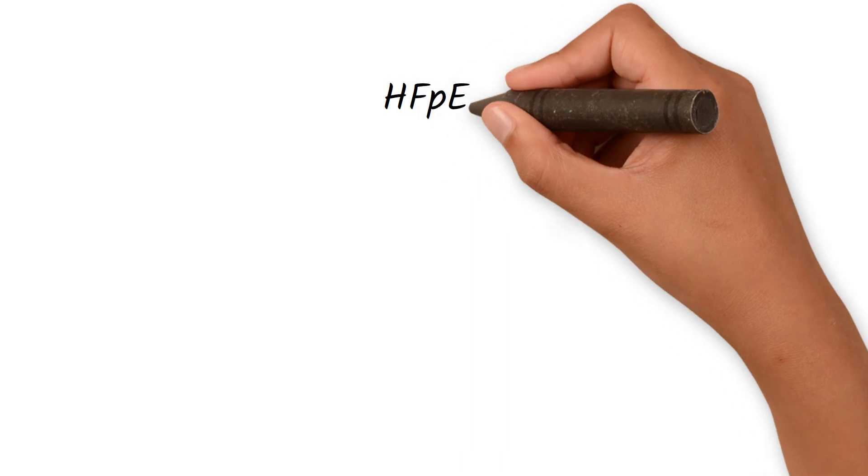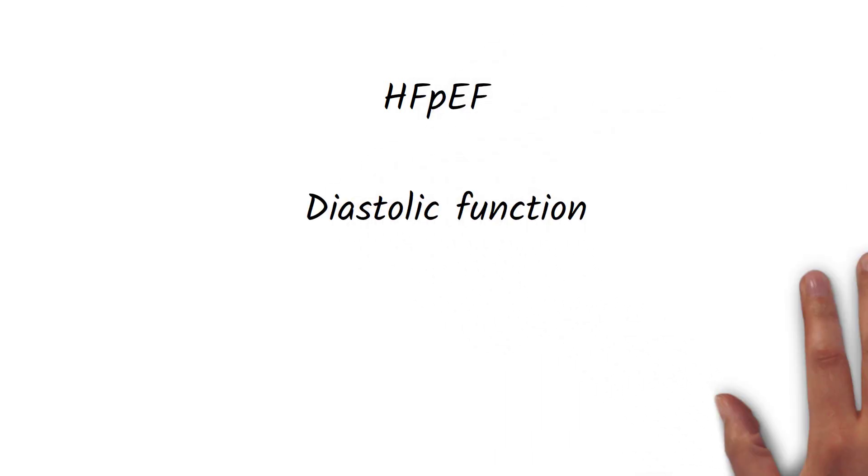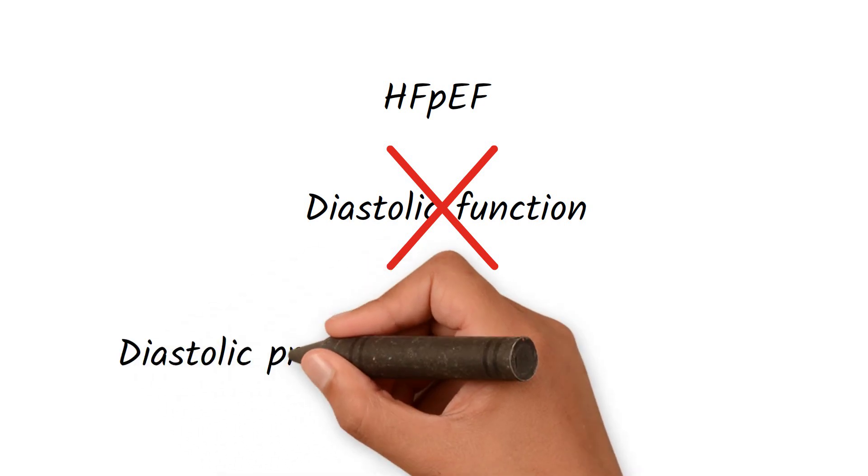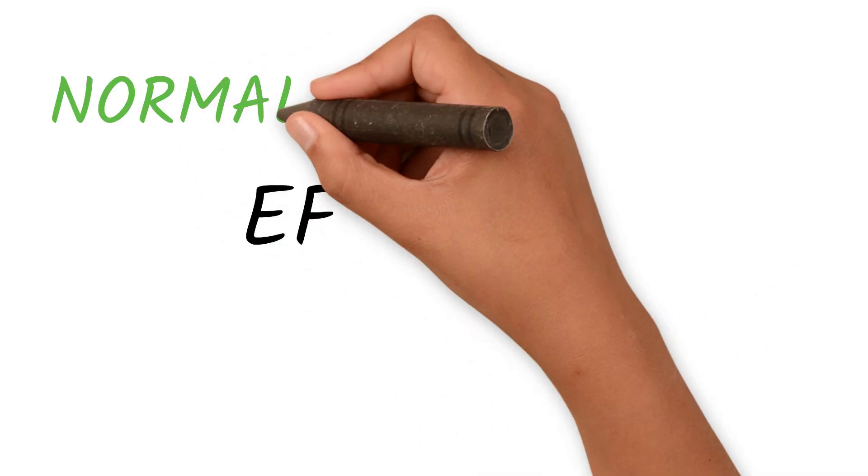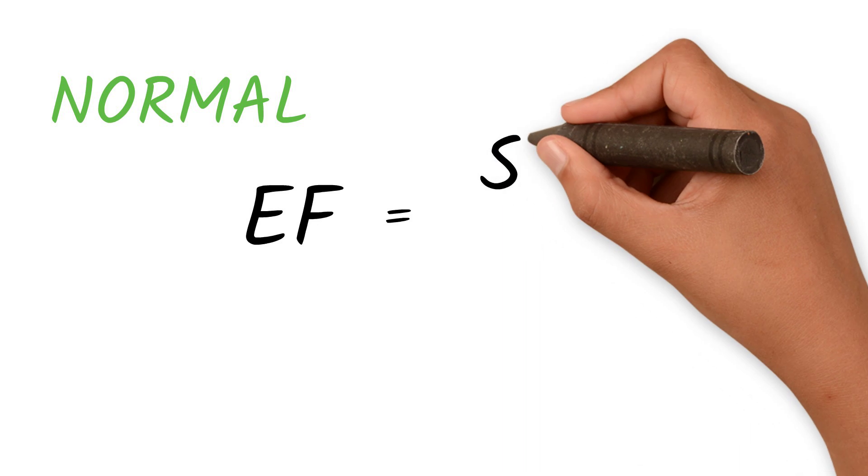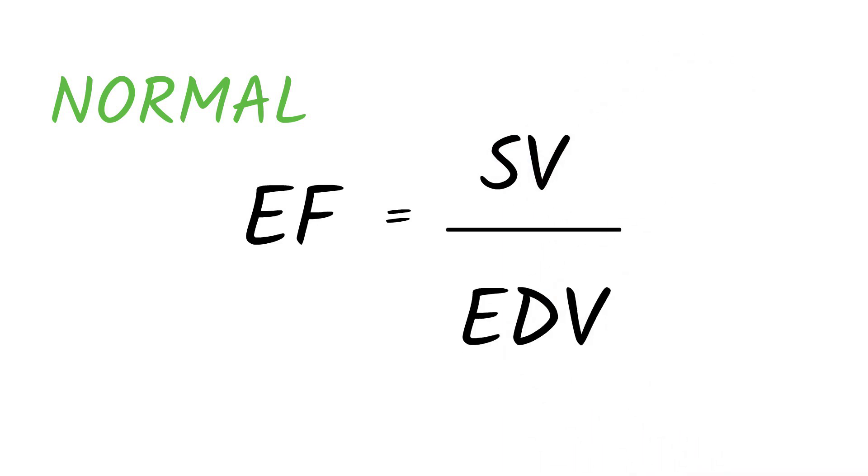Heart failure with preserved ejection fraction refers to impaired diastolic function of the left ventricle. In other words, the left ventricle cannot fill properly, which leads to an increase in the diastolic pressure of the heart. However, unlike in heart failure with reduced ejection fraction, the ejection fraction here remains normal as an increase in the diastolic pressure can increase the end diastolic volume and the stroke volume.